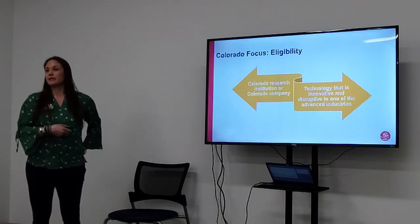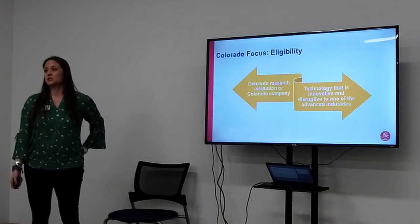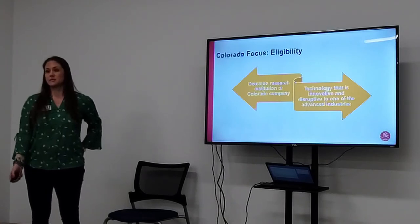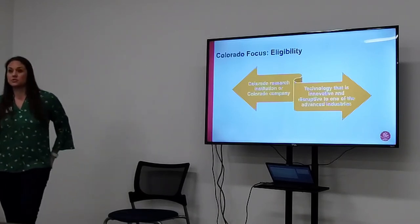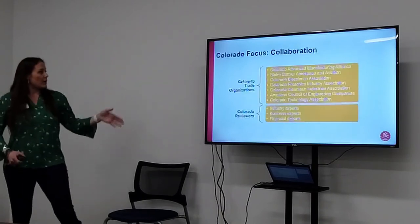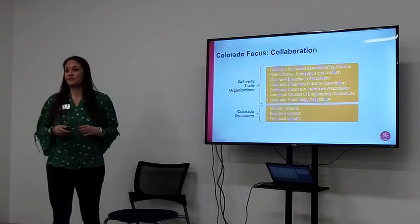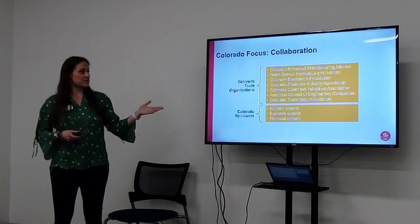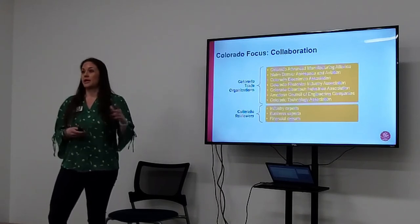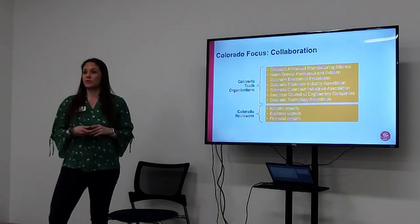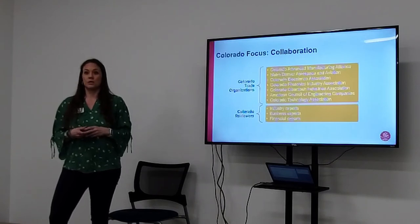For the proof of concept phase, to be eligible you have to apply through a Colorado-approved research institution — that includes a technology transfer office at any of our major universities or a federal lab — and the technology must be innovative and disruptive to one of our advanced industries. We have collaborative partners we work with closely, including seven advanced industry trade associations. I encourage you to get involved with them and attend networking events — there are founders, CEOs, and C-level executives that have grown companies to scale and can help with challenges.